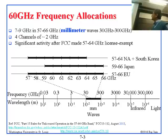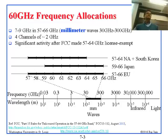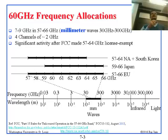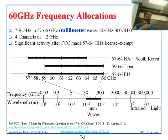30 gigahertz corresponds to 10 millimeters and 300 gigahertz corresponds to 1 millimeter. If 300 GHz is 1 mm, what is 60 GHz? The ratio of 60 to 300 is 5, so it's 5 millimeters. The wavelength times frequency equals the speed of light: 5 mm × 60 GHz = 300 meters per microsecond. So we are using a 5 millimeter wave — this is why it's called millimeter-based transmission.